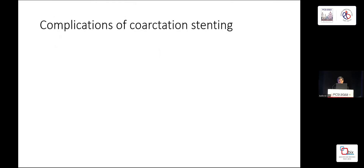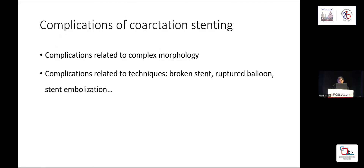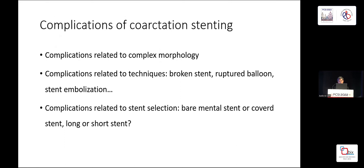But what are the complications of coarctation stenting? The first is complication related to complex morphology. The second is complication related to technique — some cases with broken stent, ruptured balloon, and stent embolization. And some complications are related to stent selection: choosing the wrong stent, cases needing a covered stent but using a bare metal stent, or stents that are too long or too short.